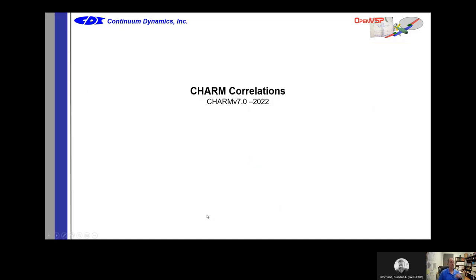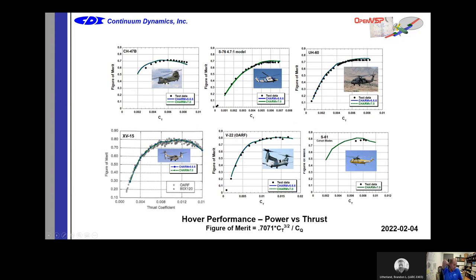The most important thing manufacturers are interested in is hover performance, and specifically figure of merit — how close you are to ideal performance, where 1.0 is ideal. One point of figure of merit is just one one-hundredth, so getting from 0.7 to 0.71 is a big deal in terms of how much you can lift. These are not easy correlations to match — you have to capture stall characteristics at high CT and 3D effects. CHARM has a full range of correlations across conventional helicopters, model helicopters, Blackhawk, XV-15, V-22, and the presidential helicopter blade.